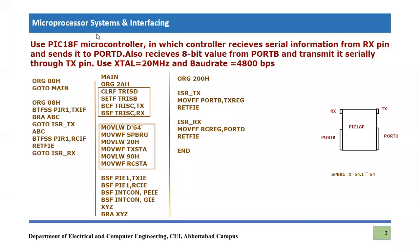Now we enable the interrupts. BSF PIE1 comma TXIE enables the transmitter interrupt, and we also enable the receive interrupt RCIE. Then we enable PEIE — peripheral interrupt enable — and GIE — global interrupt enable — to enable overall interrupts. Since we have nothing else to perform in the main task, we continuously branch to a loop label XYZ.